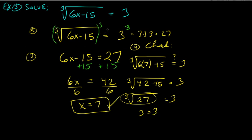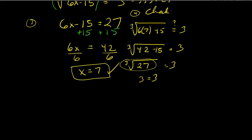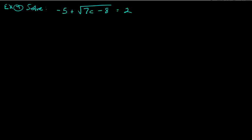The examples so far have given nice whole numbers, but answers could also be fractions like one-half or two-thirds. Let's do one where you get a fraction. We want to solve: negative 5 plus the square root of (7c minus 8) equals 2.